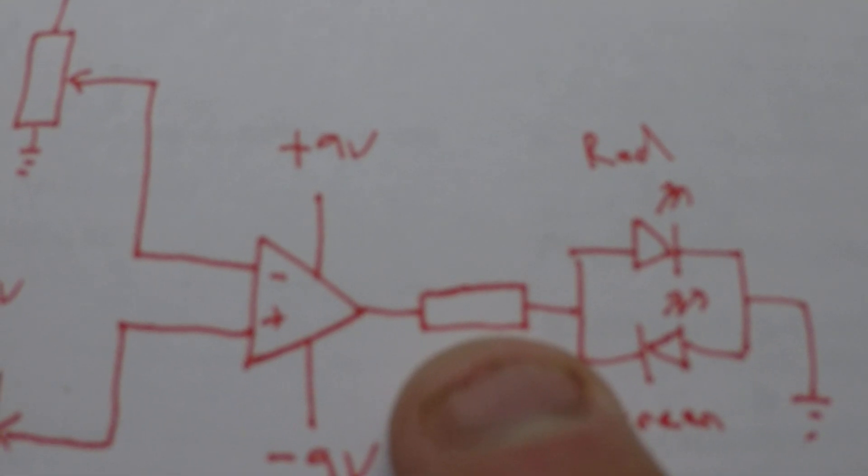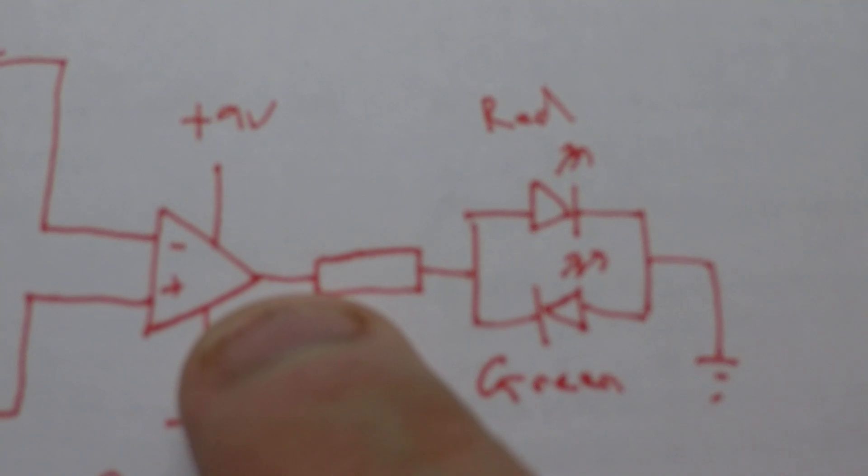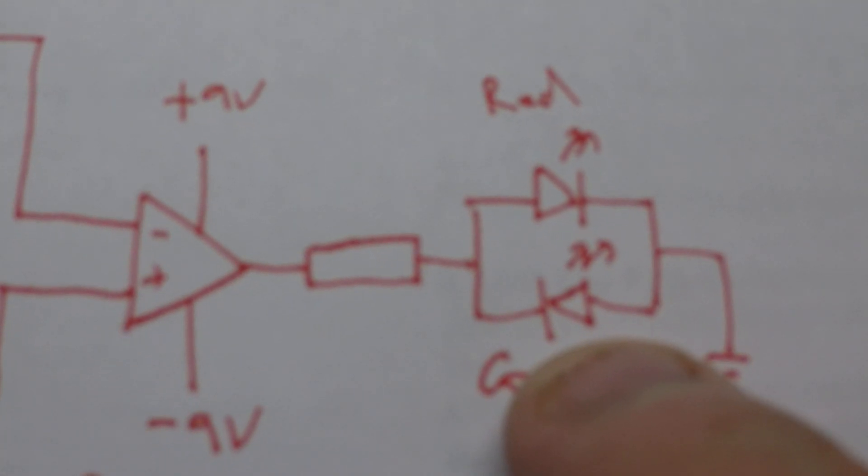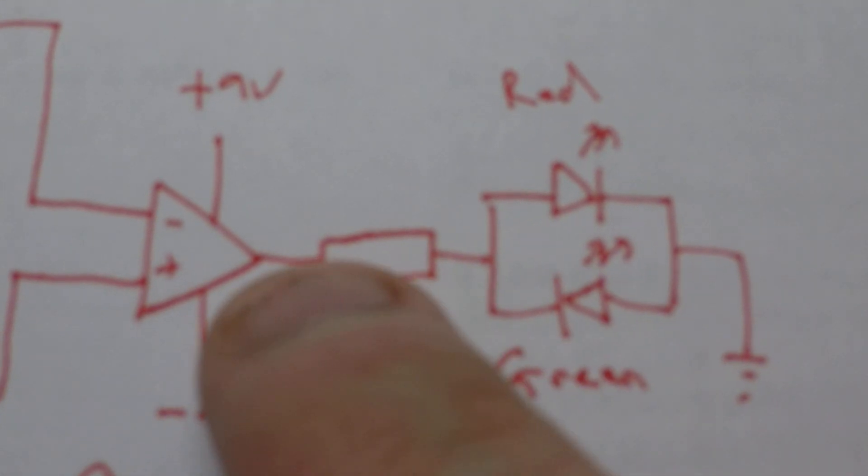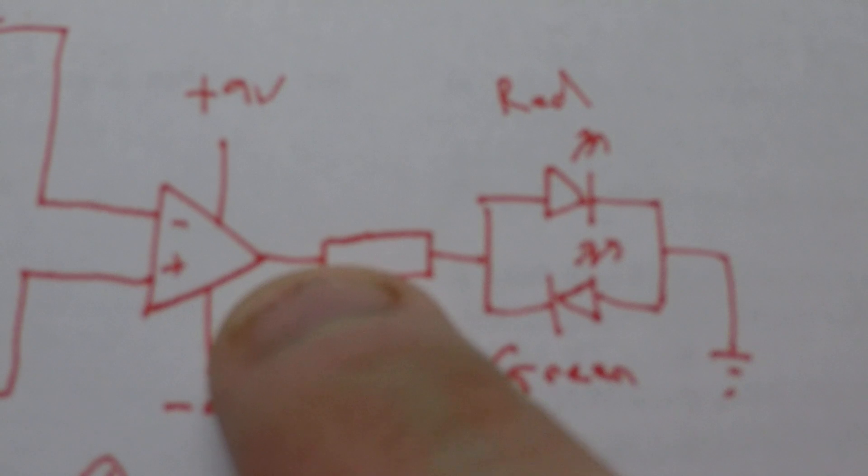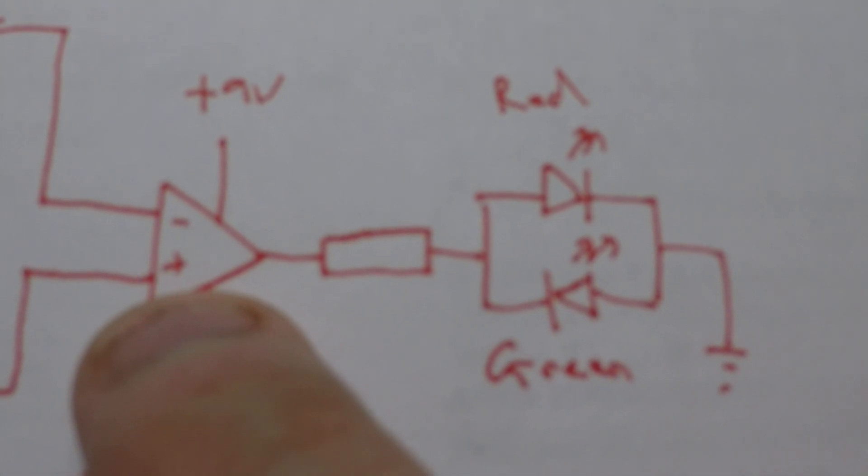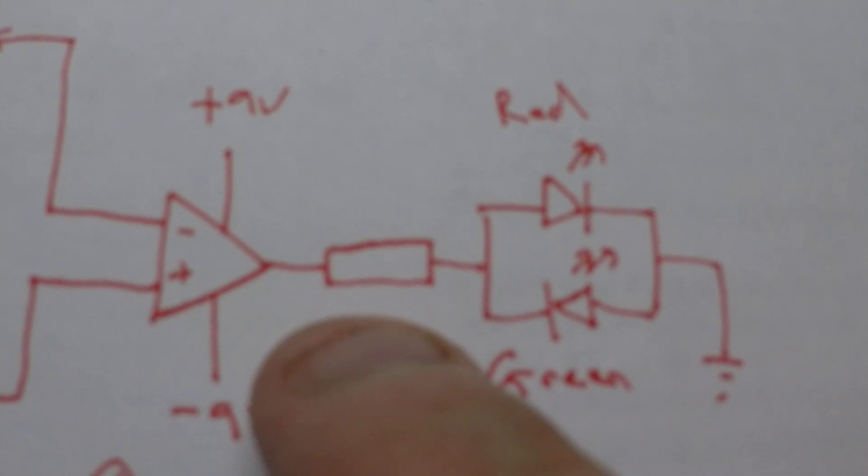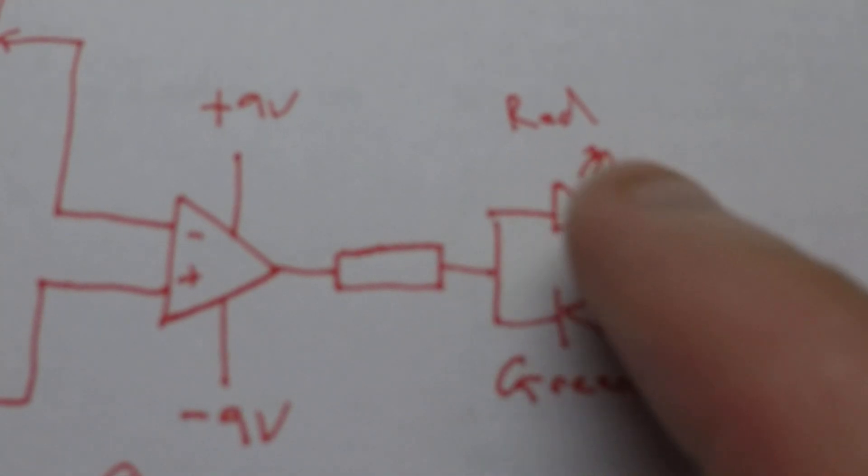Now, what I've got here, I've got a resistor. That's just to protect these two LEDs. Now, if this goes negative here, the output goes negative, current will be drawn this way and my green LED will turn on. If the output becomes positive, so that means the positive input is dominating over the negative, then current will flow in this direction and my red light will turn on.